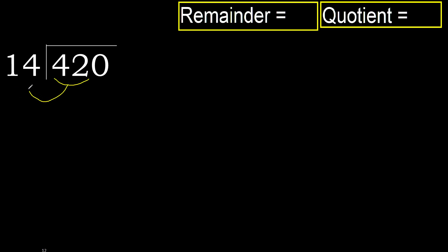42 is not less than 14, so we work with 42. 14 multiplied by which number is nearest to 42 but not greater? 14 multiplied by 4 is greater, so 14 multiplied by 3 is 42 — not greater, ok.